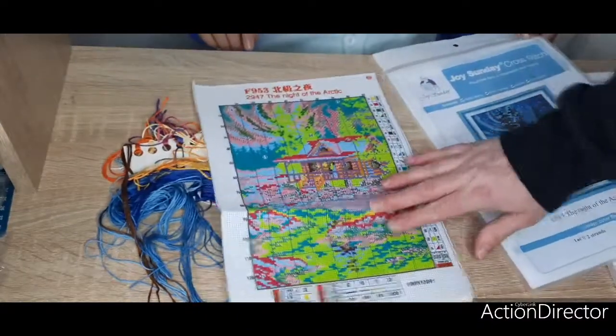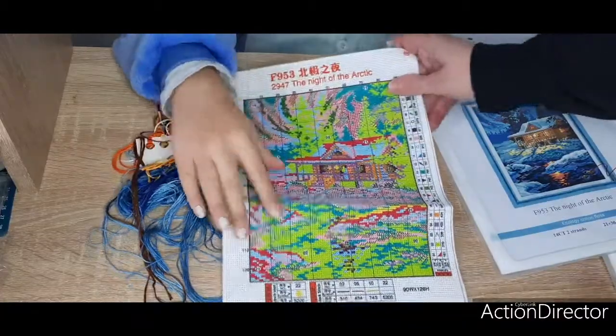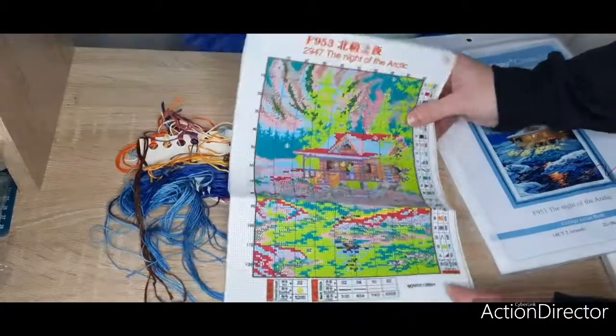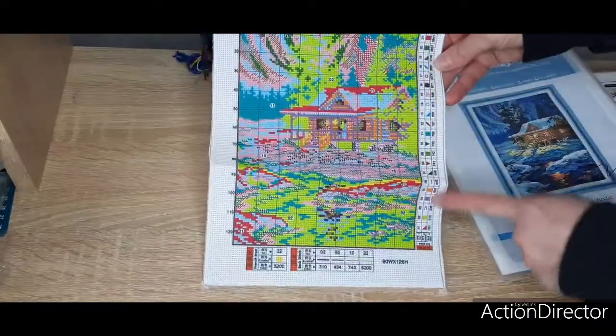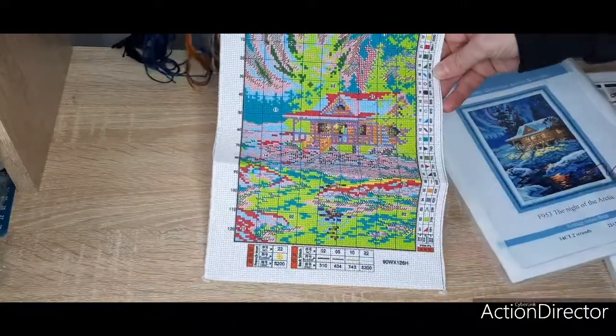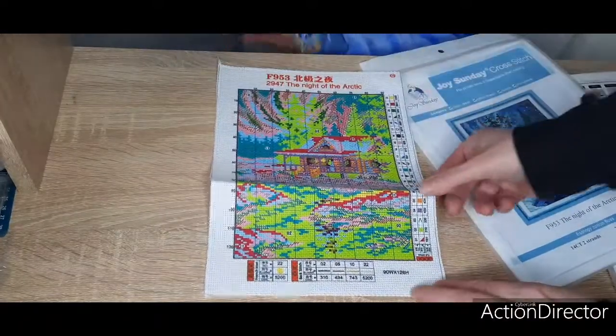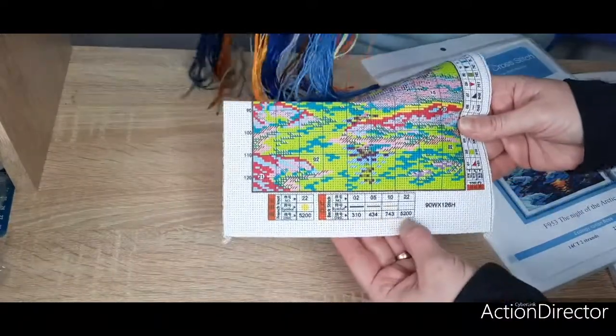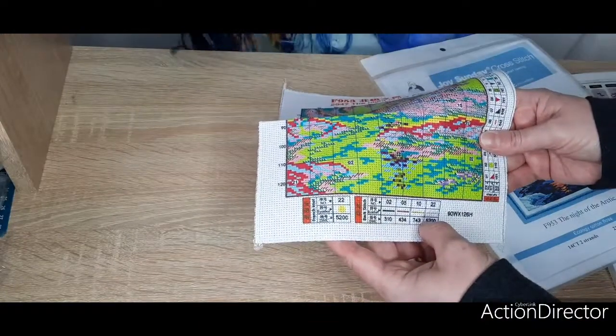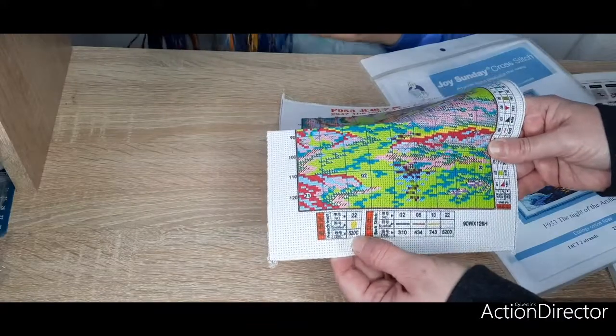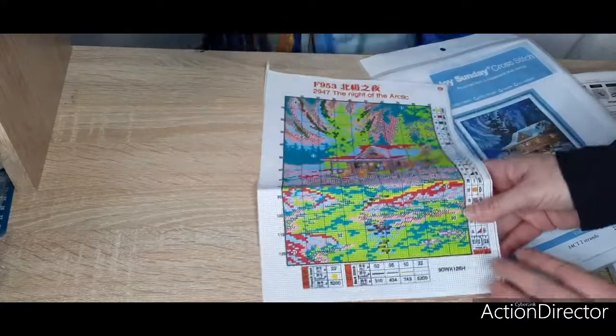You can see how small it is. And this shows all the symbols on the side that we should be following with the two strands. Here is the backstitch - one, two, three, four backstitch colors and one or two French knots.